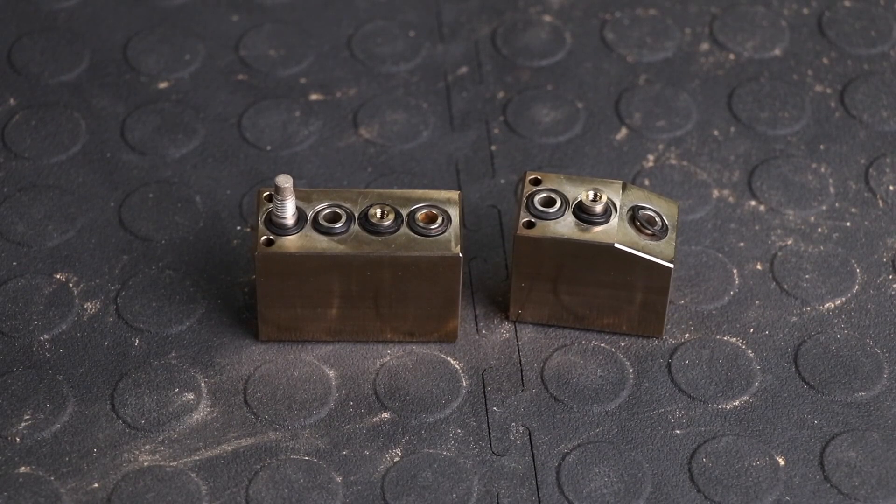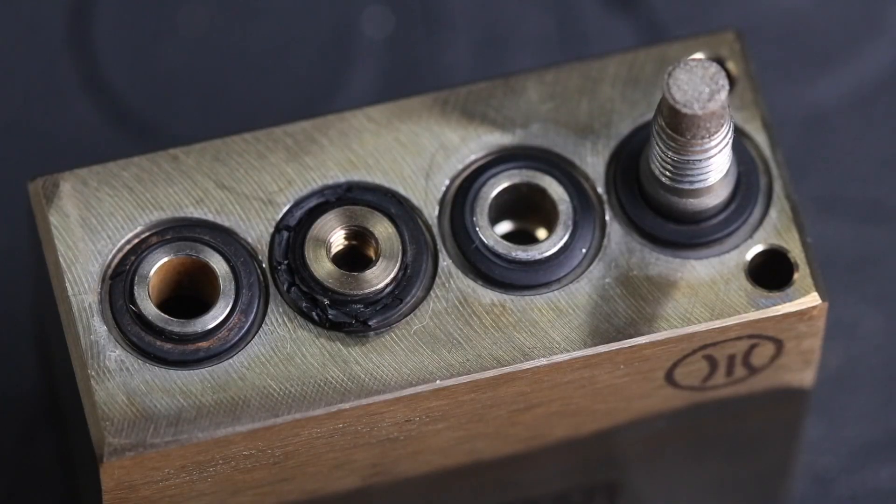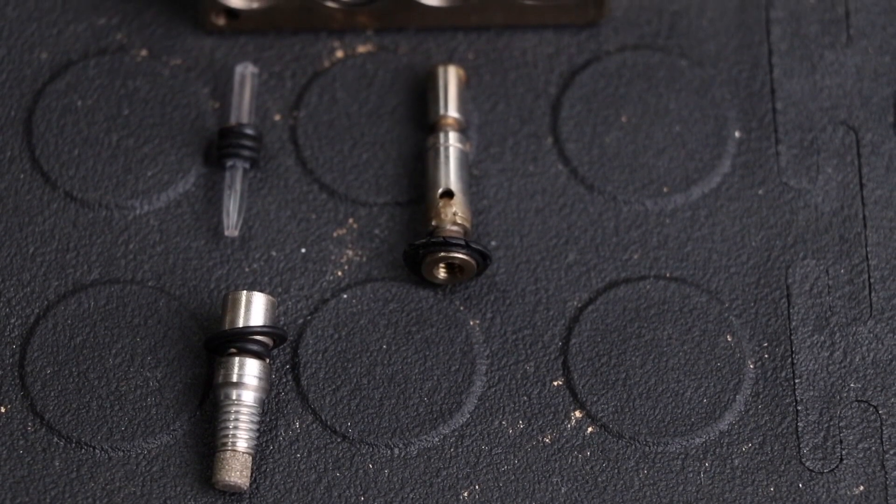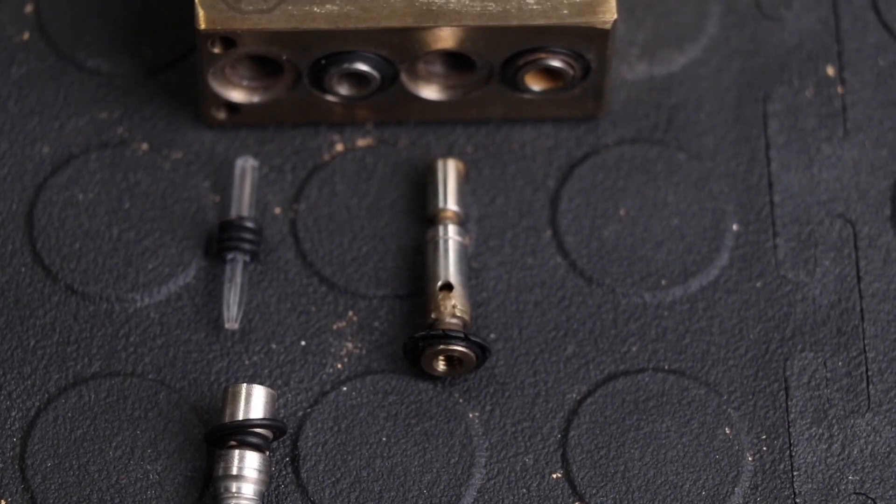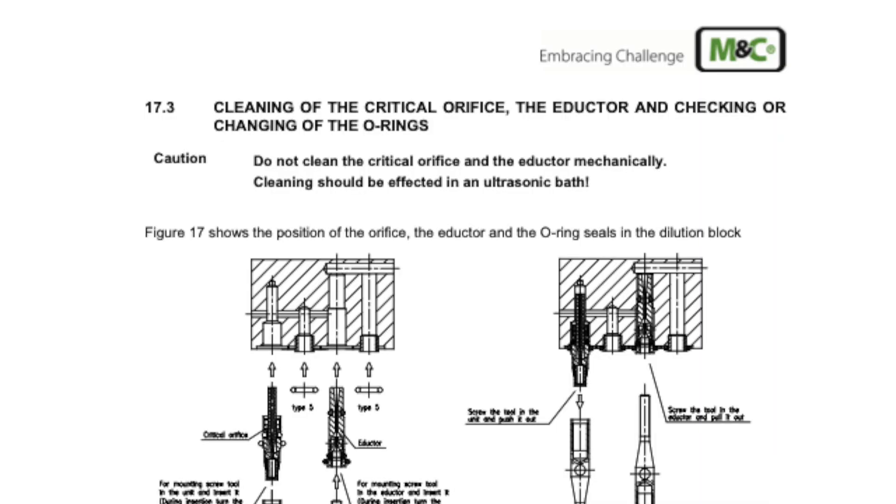Inspect the O-rings. If they are damaged or flattened, replace them. Use the provided tool to remove the critical orifice, eductor, and bypass eductor from the blocks. Refer to Chapter 17 in the user's manual for an exploded drawing of the equipment.